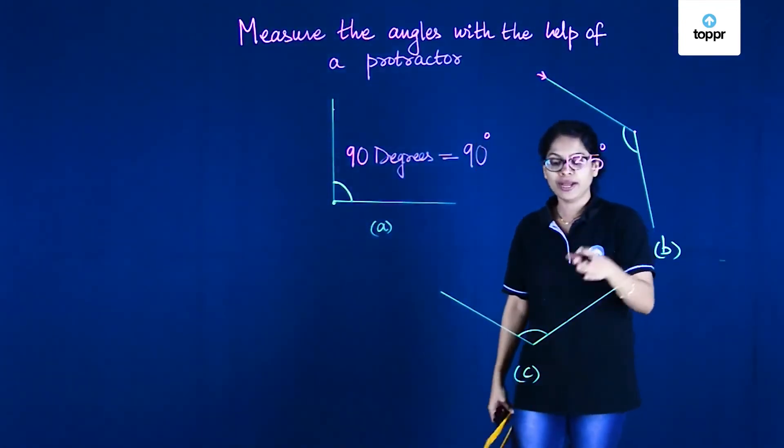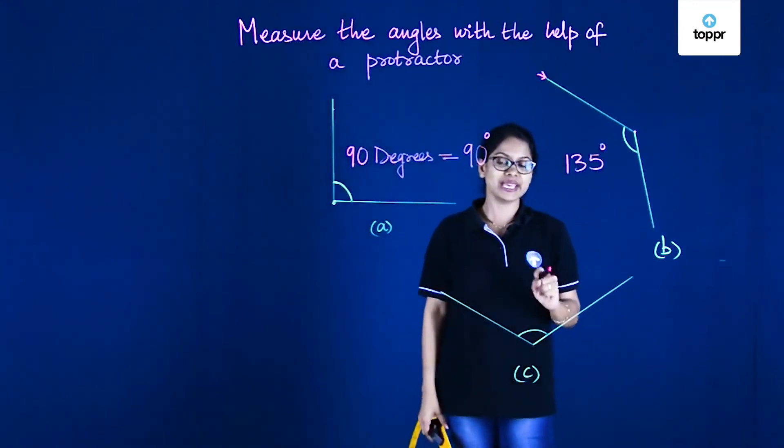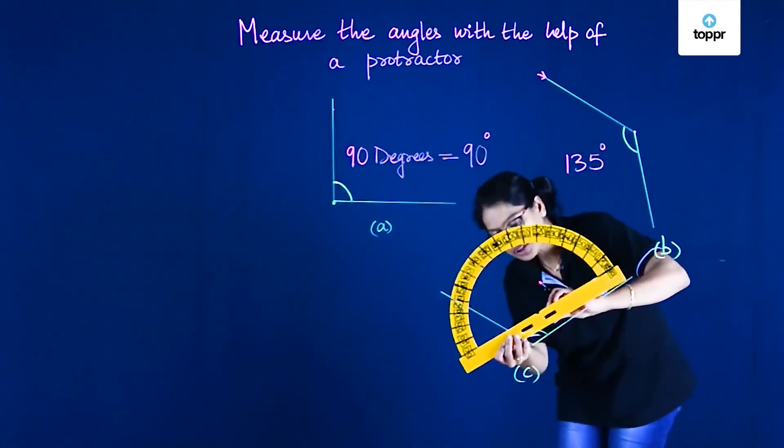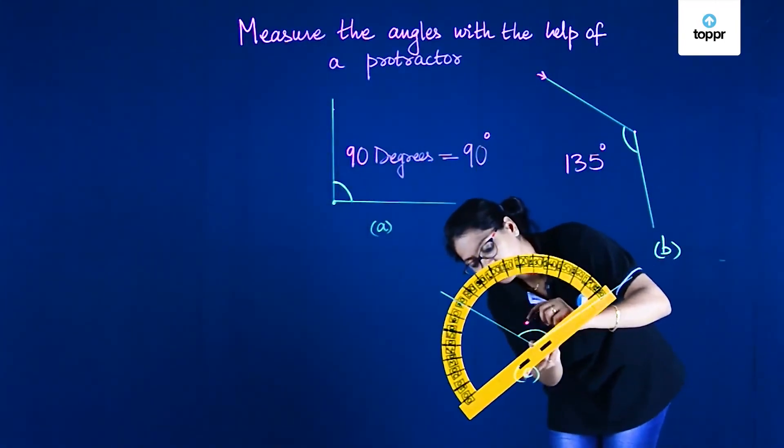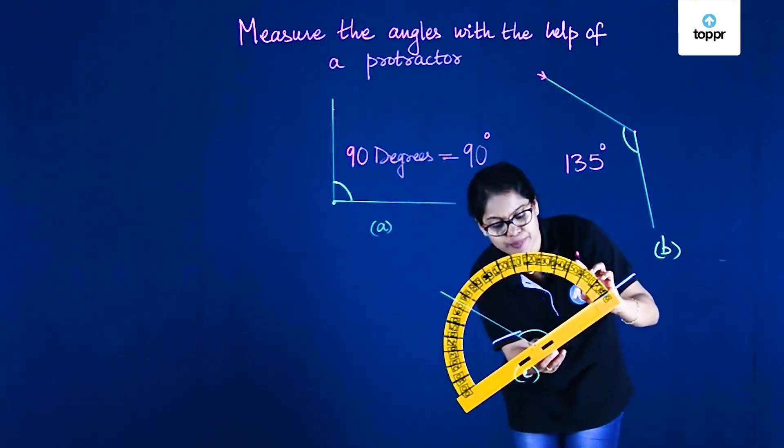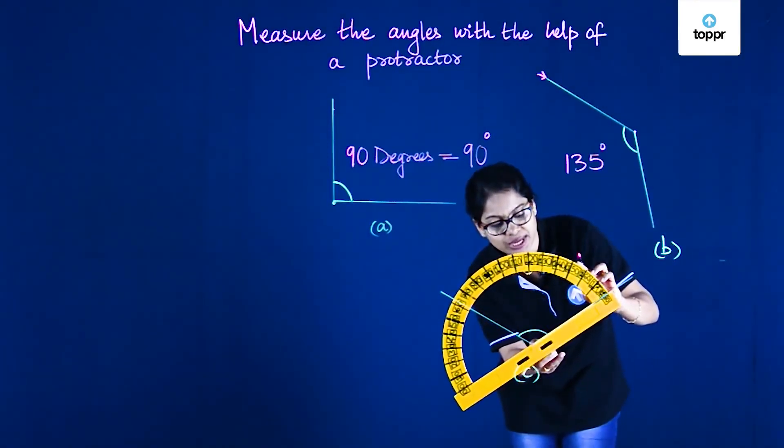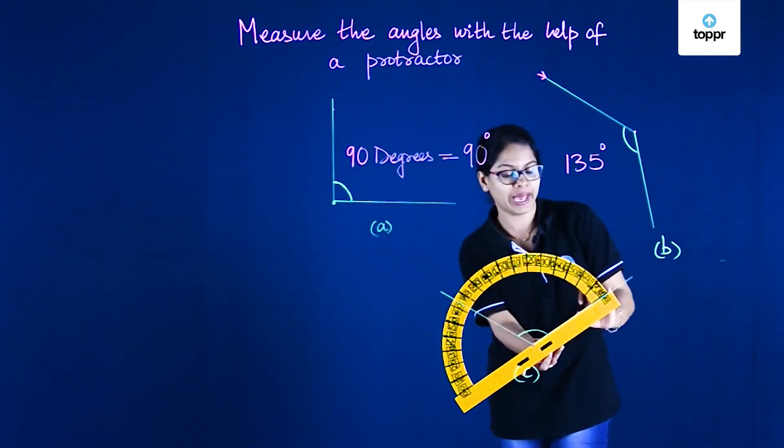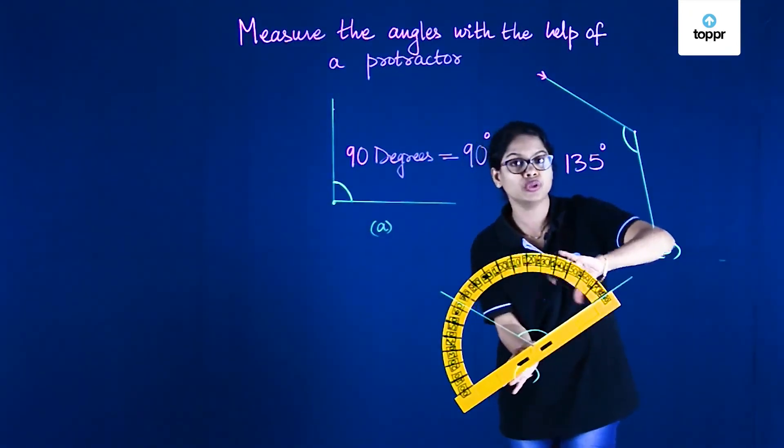Now let's move ahead to this third bit here, angle C, and measure in exactly the same manner. Placing the protractor so that the vertex coincides with the middle point and then adjusting the baseline so that it is exactly coinciding with the base of the angle. Then we'll follow the zero mark.